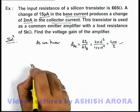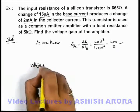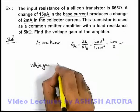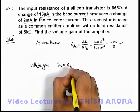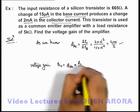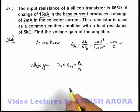And we know that the AC voltage gain of the amplifier we can write as A-v equals beta AC multiplied by R-l over R-i, as we already discussed in the previous section.